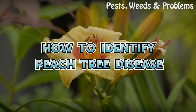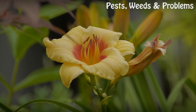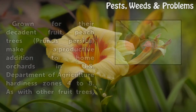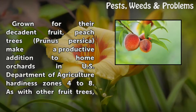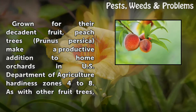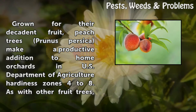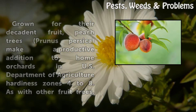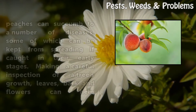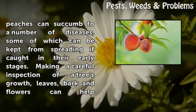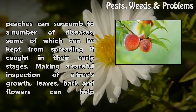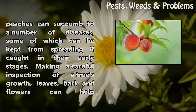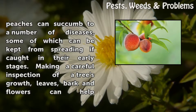How to Identify Peach Tree Disease. Grown for their decadent fruit, peach trees (Prunus persica) make a productive addition to home orchards in U.S. Department of Agriculture hardiness zones 4 to 8. As with other fruit trees, peaches can succumb to a number of diseases, some of which can be kept from spreading if caught in their early stages.